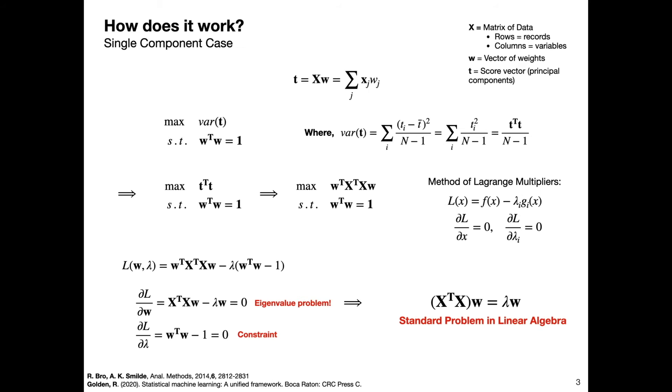If you sort these eigenvalues and eigenvectors from largest to smallest, each corresponding eigenvector w is going to be a set of weights which define a principal component. The principal components associated with the larger eigenvalues contain more information than components associated with smaller eigenvalues.